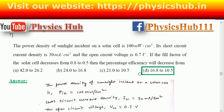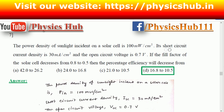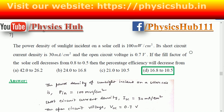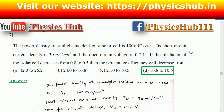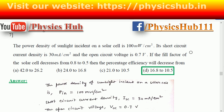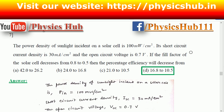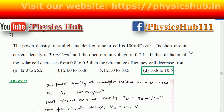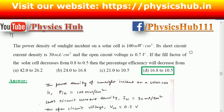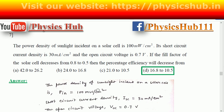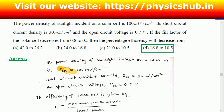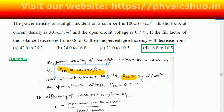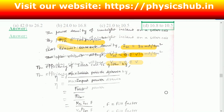Moving to question number seven: the power density of sunlight incident on a solar cell is 100 milliwatt per centimeter squared. Its short-circuit current density is 30 milliampere per centimeter squared and the open-circuit voltage is 0.7 volt. If the fill factor of the solar cell decreases from 0.8 to 0.5, then the percentage efficiency will decrease from what to what? To solve this, you need the expression for solar cell efficiency.